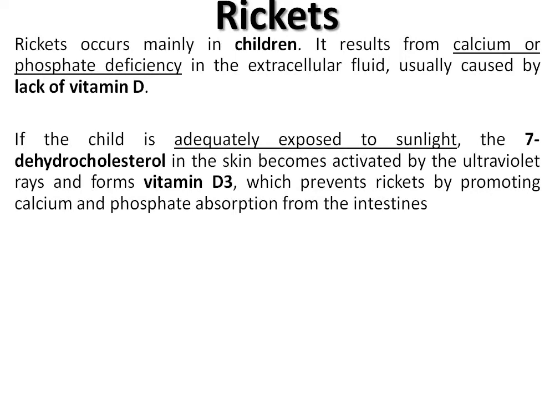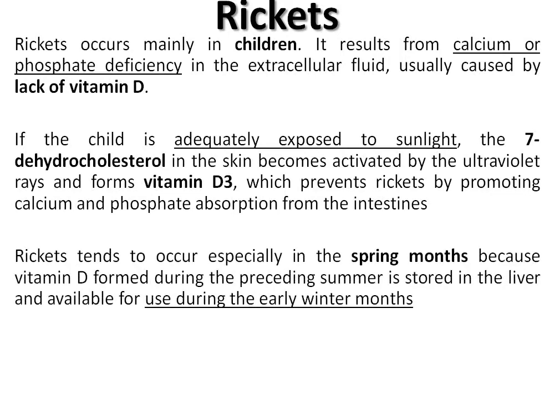If the child is adequately exposed to sunlight, the 7-dehydrocholesterol in the skin becomes activated by ultraviolet rays and forms vitamin D3, which prevents rickets by promoting calcium and phosphate absorption from the intestines. The peculiar time at which rickets occurs is the spring months, because vitamin D formed during the preceding summer is stored in the liver and available during the early winter months.